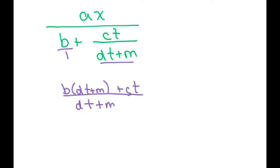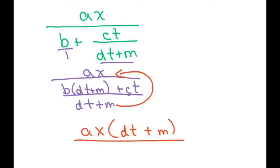Again, this is all under AX. So all you have to do is move this guy up here with the numerator. So you get AX times DT plus M all over this piece, which is B times DT plus M plus CT.